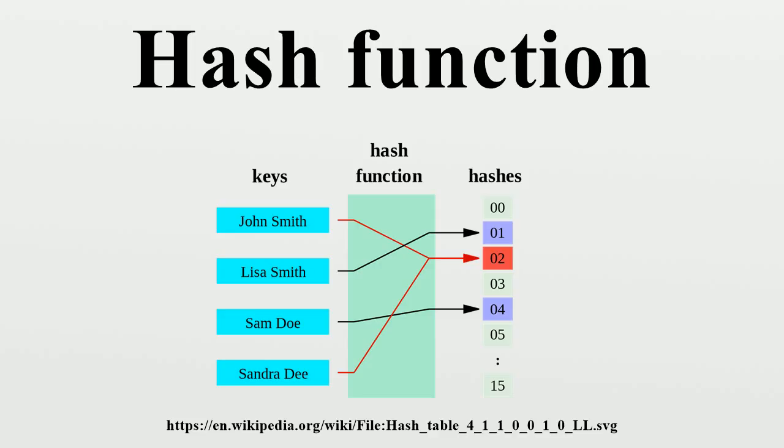Although these concepts overlap to some extent, each has its own uses and requirements and is designed and optimized differently. The hash keeper database maintained by the American National Drug Intelligence Center, for instance, is more aptly described as a catalogue of file fingerprints than of hash values.